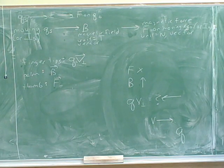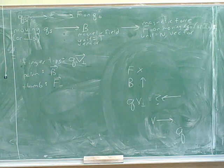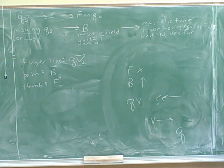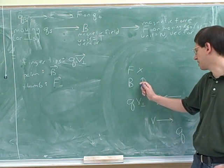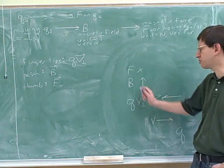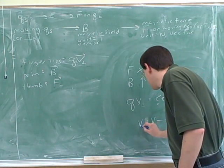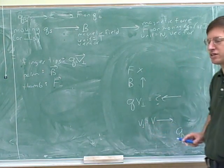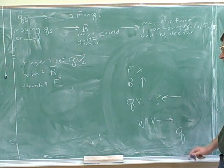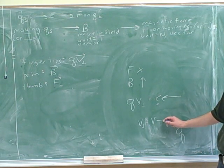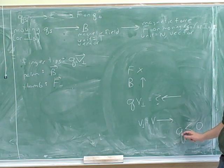What would V perpendicular be in this case? V perpendicular is equal to V. V perpendicular means the component of V that is perpendicular to the magnetic field. Here the entire vector is perpendicular to the magnetic field, so this also means V perpendicular — the standard case where the velocity is already perpendicular to B. We have to explain how it could be that QV perpendicular is opposite to V perpendicular.